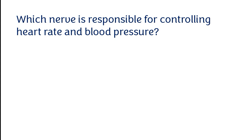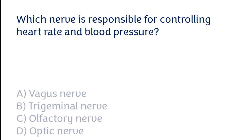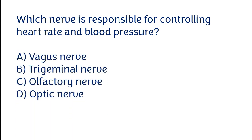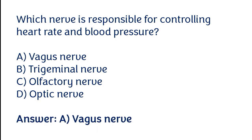Which nerve is responsible for controlling heart rate and blood pressure? Vagus nerve, trigeminal nerve, olfactory nerve, or optic nerve. The correct answer is option A — the vagus nerve is responsible for controlling heart rate and blood pressure.